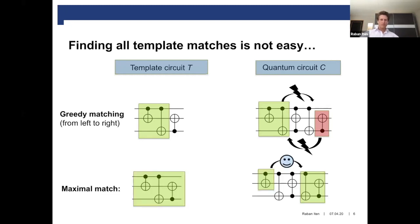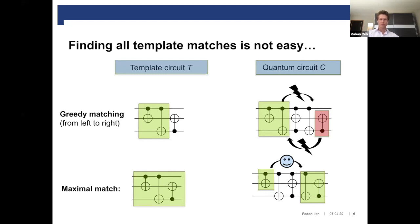But using non-greedy matching, one could actually find a maximal match. So if we do not match the second gate in the circuit with the second gate in the template, but instead match it with the fourth gate in the circuit, then we find a full match because now this first CNOT gate can be commuted through these two gates. This is just an example to show that greedy matching is not optimal in general.